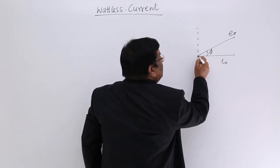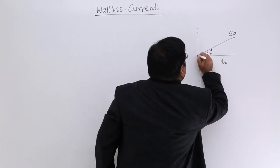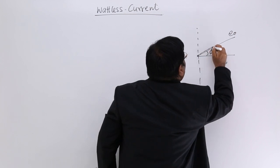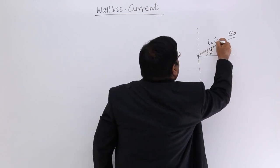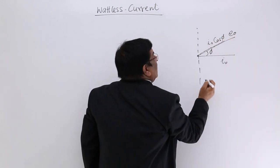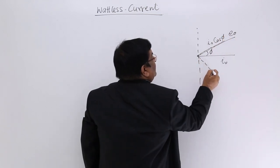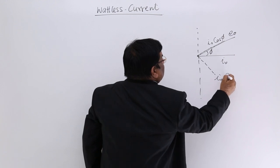One component of this current, which is I0 cos φ, is in this direction. There is another component which is I0 sin φ.